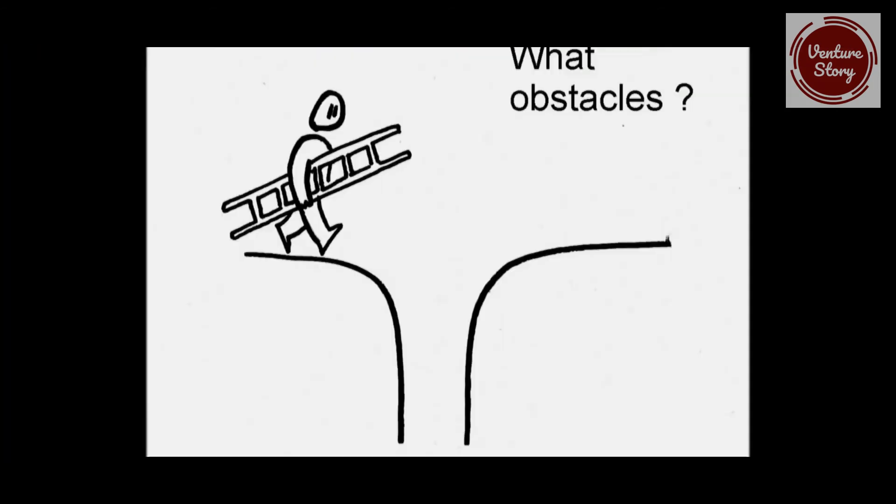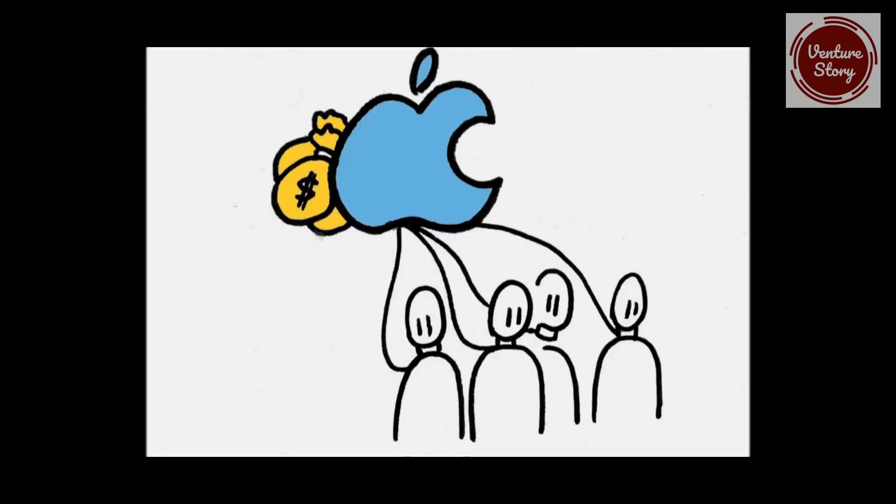We need to advance, and to do that, we have to cross obstacles. One of them is there are big companies that make a lot of money by having control over users, and they don't want to let us advance. We have to overcome their opposition.